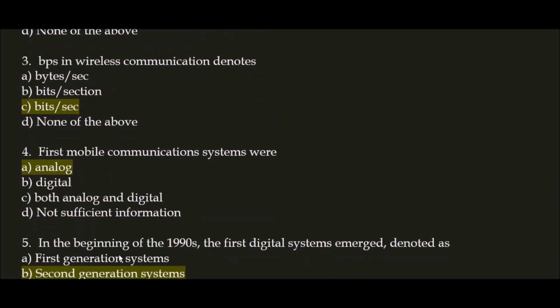Next question: BPS in wireless communication denotes — option A: bytes per second, option B: bits per section, option C: bits per second. The correct answer is option C: bits per second. BPS stands for bits per second.